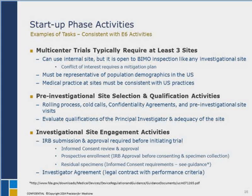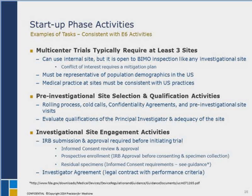So now we have our plan. We know what we're going to do and have an idea how we're going to proceed. We want to go through the process of site selection and qualification — start calling sites, make sure they're qualified, that our principal investigators and the site have the ability to do exactly what we want. You're going to spend a lot of time in this area trying to find investigators that are interested and sites that are capable, because this is really going to become the cornerstone of the success of your trial.